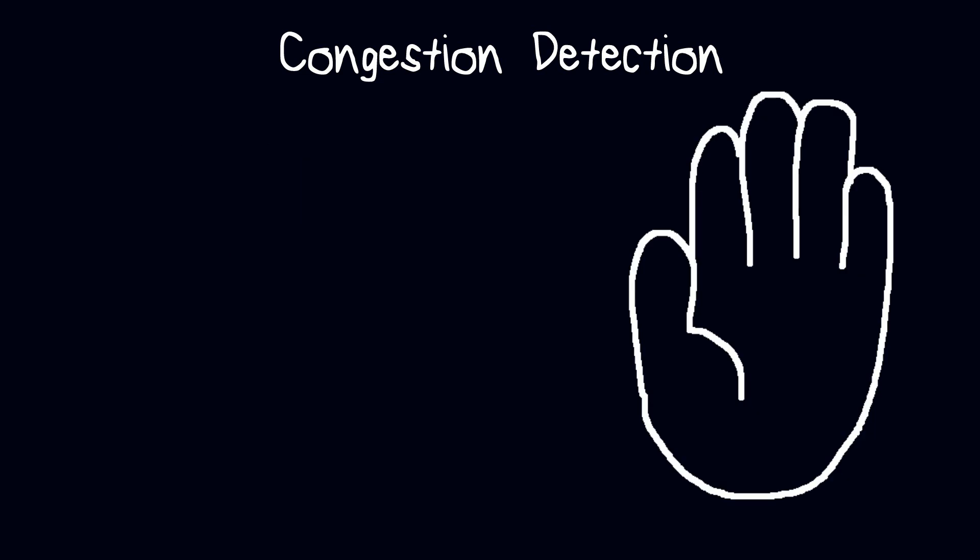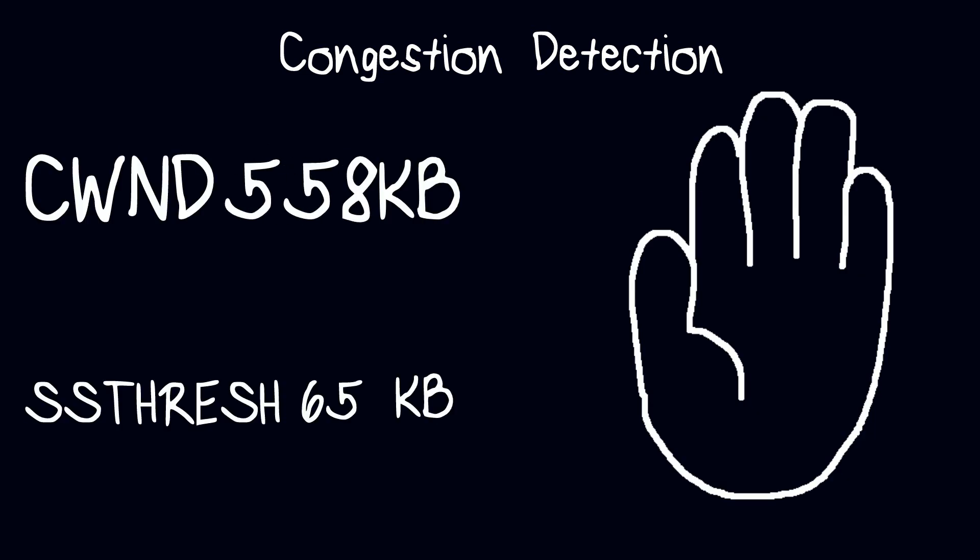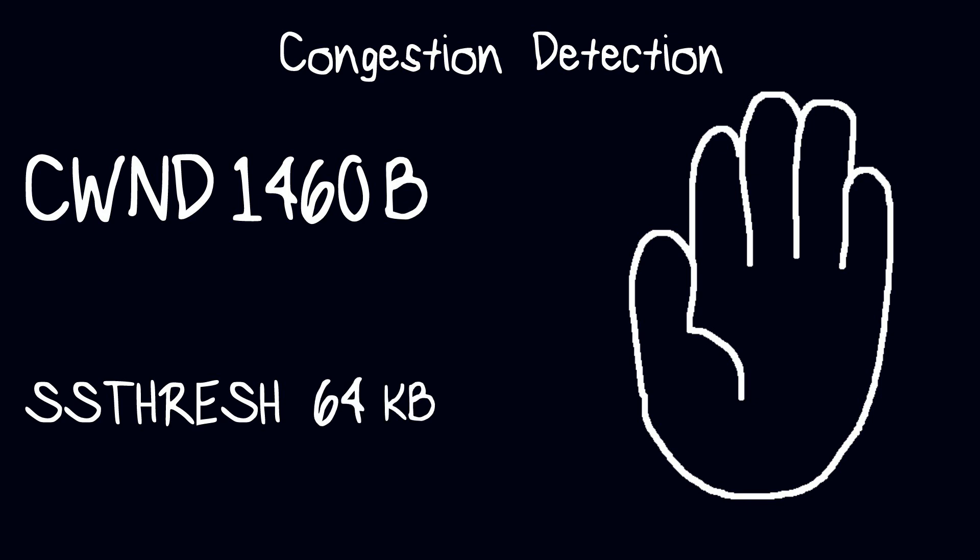When congestion is detected, the congestion window size is reset to its initial size, the congestion avoidance threshold is reduced, for example let's say it becomes the maximum between two maximum segment sizes and half the previous congestion window size, and we start all over again with slow start. This time however, we will reach the congestion avoidance phase quicker.